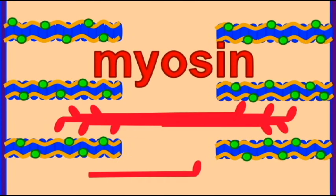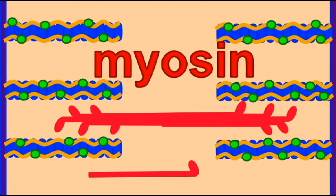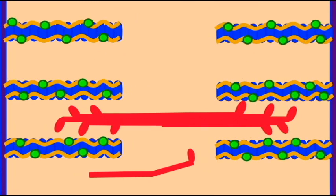In a sarcomere, the myosin filaments in the center can yank the actin filaments anchored in the Z-disks towards the center of the sarcomere.